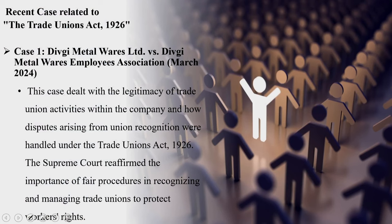Let's start with the Trade Union Act. This is one of the recent cases that have emerged under the Trade Unions Act 1926 — the case of Divgi Metalwares versus Divgi Metalwares Employee Association, decided by the Supreme Court very recently, March 21, 2024. The central issue revolved around the legality of transferring 66 employees from the SIRSI factory in Karnataka to the Pune factory in Maharashtra. The Supreme Court upheld the transfers, emphasizing that the terms of appointment permitted such action.